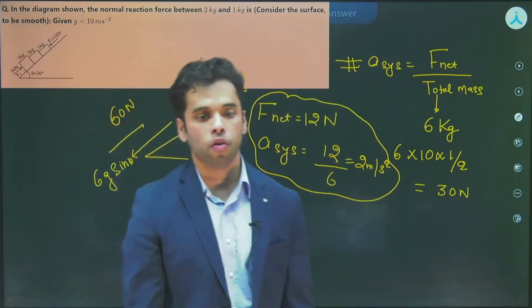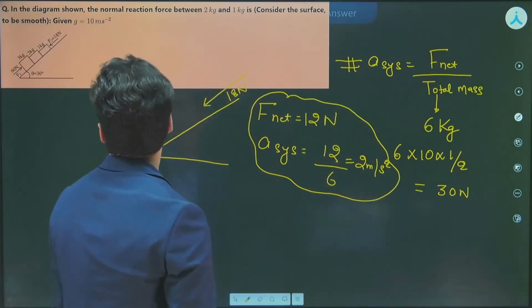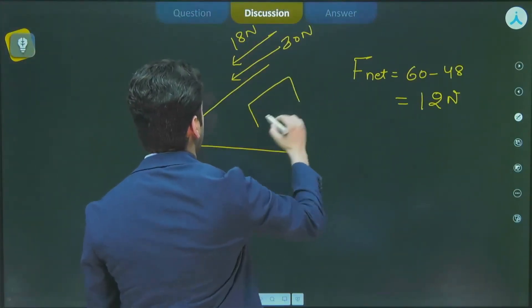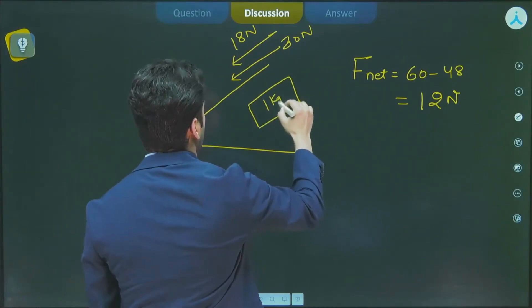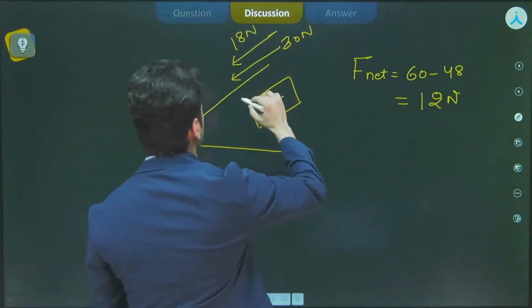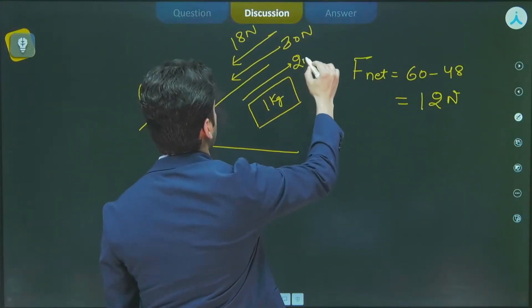But the problem is still not over. We need to calculate the contact force between 2 kg and 1 kg. So let me draw the free body diagram of 1 kg. Acceleration of system is 2 meter per second square in the upper direction, so this 1 kg will also have acceleration of 2 meter per second square in this direction.